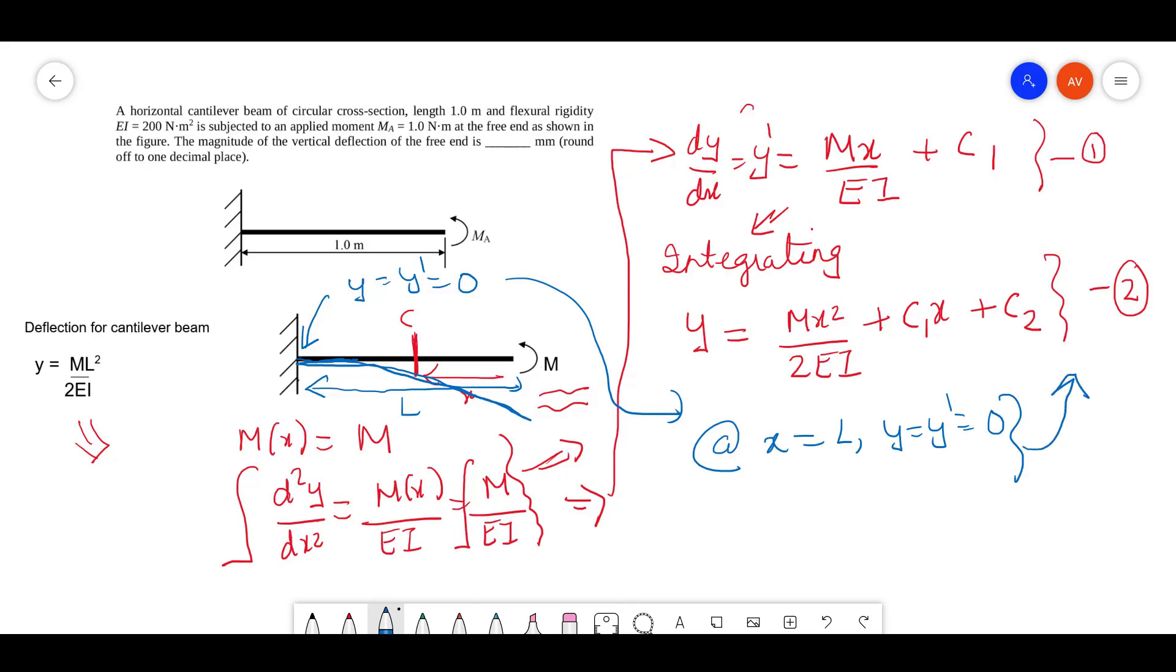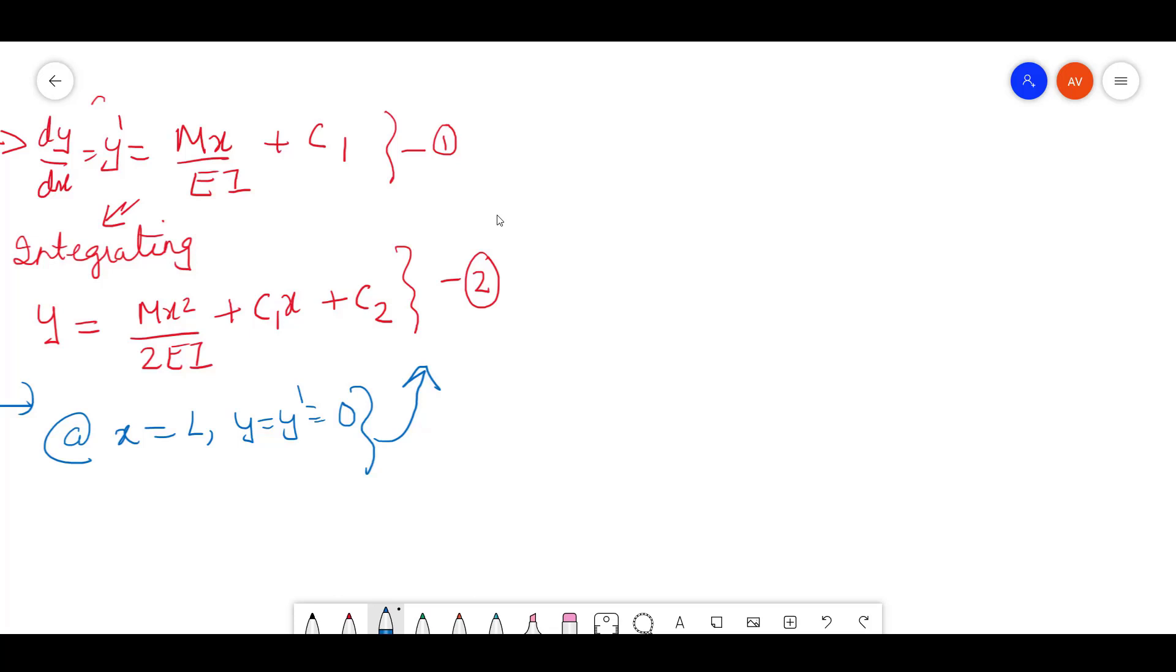From the first equation, you get C1 plus ML by EI equals zero, that means C1 equals minus ML by EI. Using the second equation, you get ML²/2EI plus C1 times L plus C2 equals zero. Now you can put this value for C1.